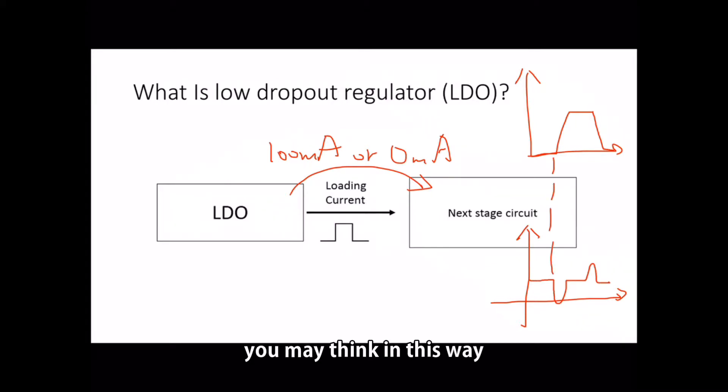You may think this way. To have better performance of LDO, LDO should respond this way. LDO should have smaller amplitude for both undershoot and overshoot. And here,